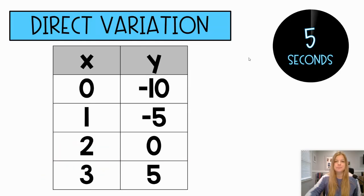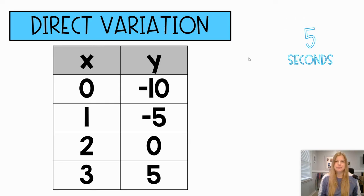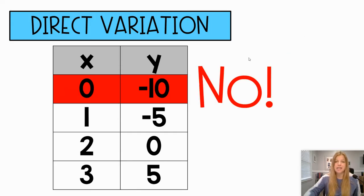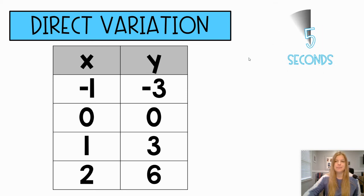We've got four problems. Is this a direct variation? Here's the kicker — when x is zero, y should be zero. So if you see x giving negative 10 when it should be zero, that's the big giveaway: it's not a direct variation. The next one is probably a dead giveaway because you see zero-zero. Also make sure the x values are increasing by ones — which they are — and y values are increasing by three, so it's definitely linear and goes through the origin. The answer is yes.